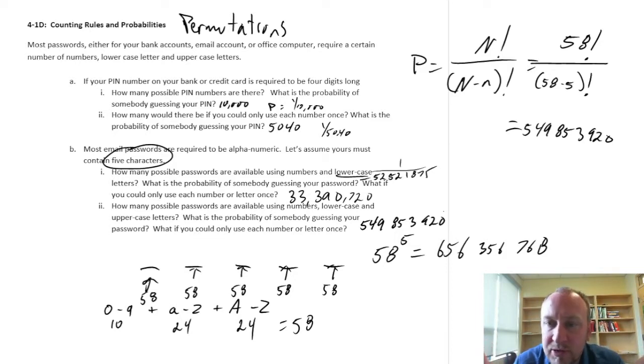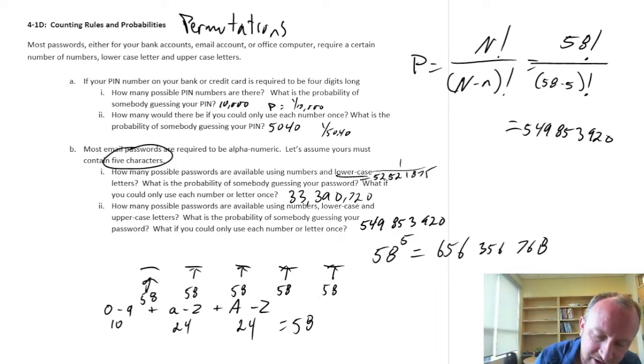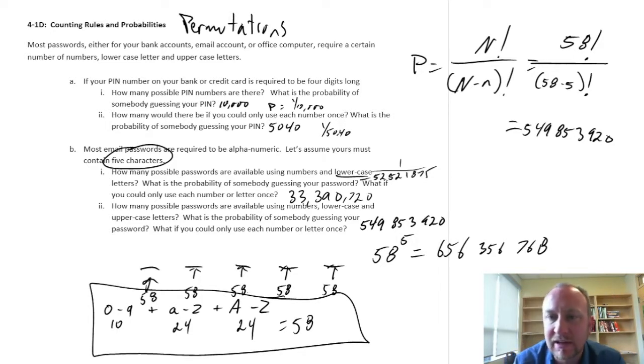Okay, so here's how permutations work in your emails and any of your passwords. Right, so there's a significant increase in security when you start to incorporate small letters and capital letters. And then, if you can add symbols and things in there, it gets even larger very quickly. Okay, so hopefully this helps in calculating these permutations. Okay, thank you for watching.